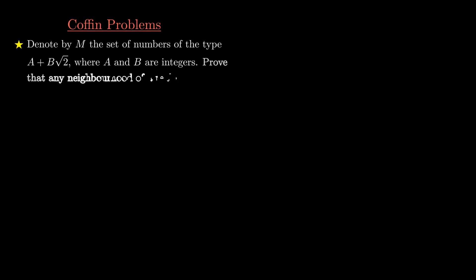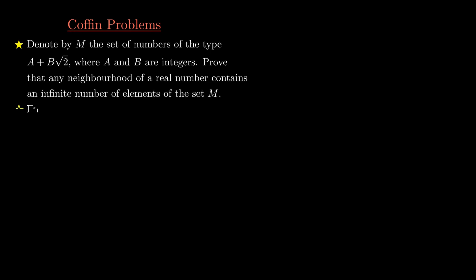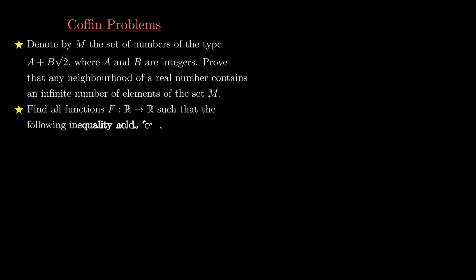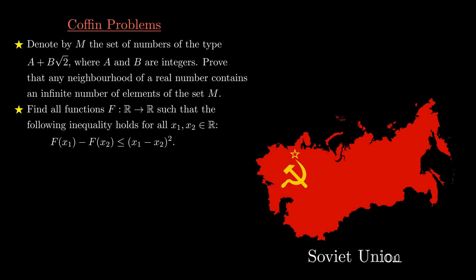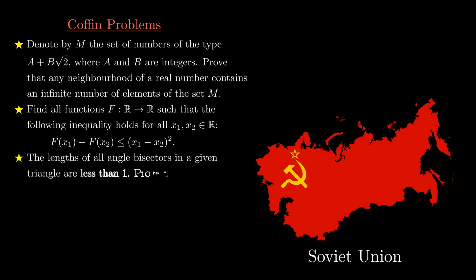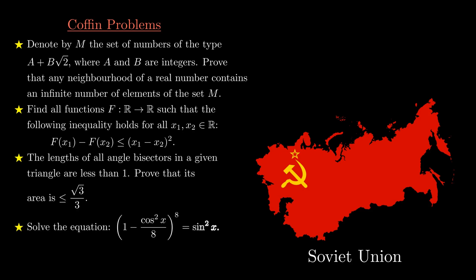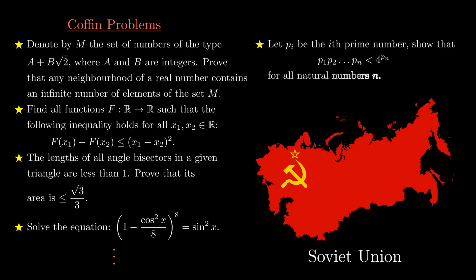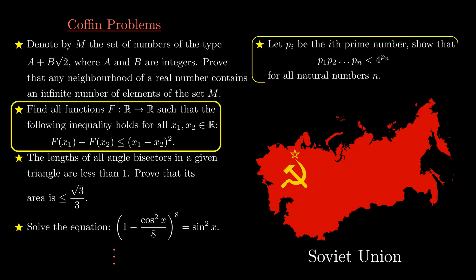Coffin problems are some of the hardest yet fascinating math problems given to mainly Jewish students at Soviet universities in the Soviet Union during the late 1970s. They are designed to be really hard, with solutions that are nearly impossible to find, but comprised of purely elementary solutions. In this video, we will be solving two of the coffin problems — one on prime numbers and another on functional inequality.